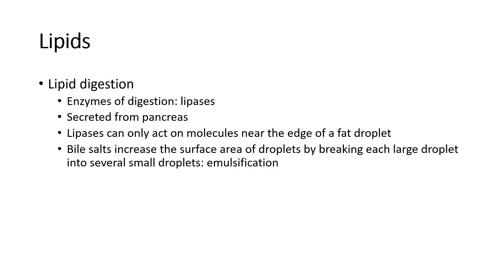This is where bile salts come in. Bile salts are going to act as a detergent to break up or emulsify those large fat droplets into smaller fat droplets — a process called emulsification. The lipase can then access the entirety of the fat droplet once it's in a much smaller size. So bile salts are important to emulsifying fats so that they can be digested and then absorbed appropriately.